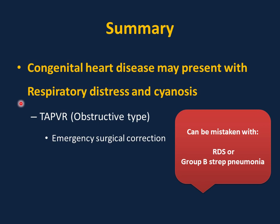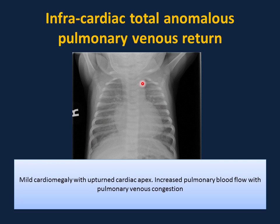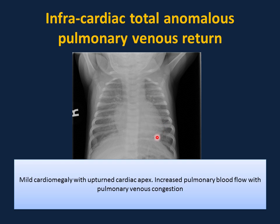Cyanosis with decreased pulmonary vascularity: differential diagnosis includes tetralogy of Fallot, tricuspid atresia, and pulmonary atresia. Cyanosis with increased pulmonary vascularity: differential includes transposition of great arteries, truncus arteriosus, and total anomalous pulmonary venous connection or return. Congenital heart disease may present with respiratory distress and cyanosis — specifically the infra-diaphragmatic or obstructive type of total anomalous pulmonary venous return, which is considered a surgical emergency and can be mistaken for respiratory distress syndrome or group B strep pneumonia. This x-ray of a newborn with severe respiratory distress and cyanosis shows increased pulmonary vascular markings bilaterally with severe pulmonary congestion, mild cardiomegaly, and uplifted cardiac apex — keep infracardiac TAPVR in the differential, as without surgery this infant will not survive.